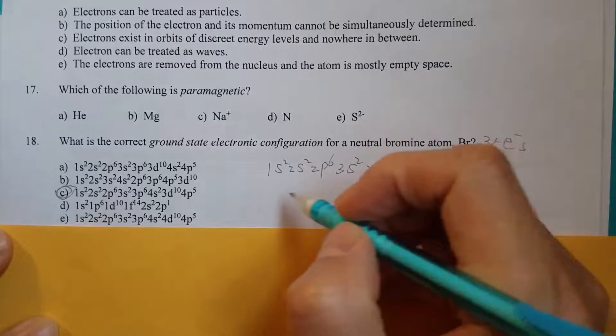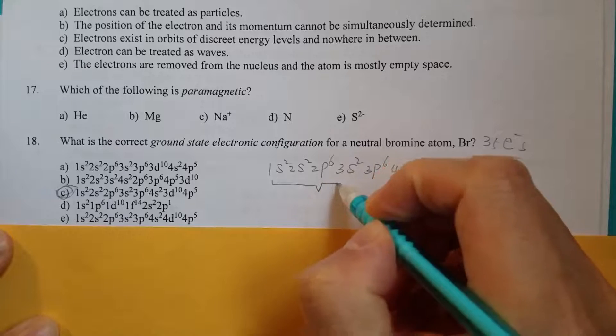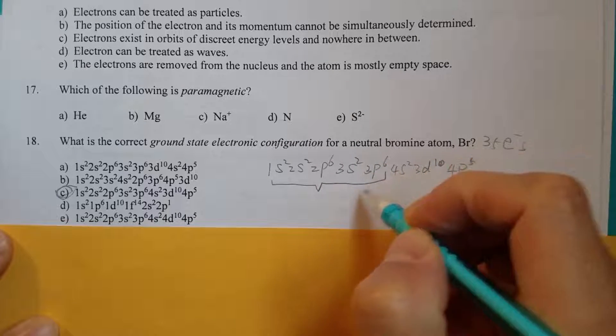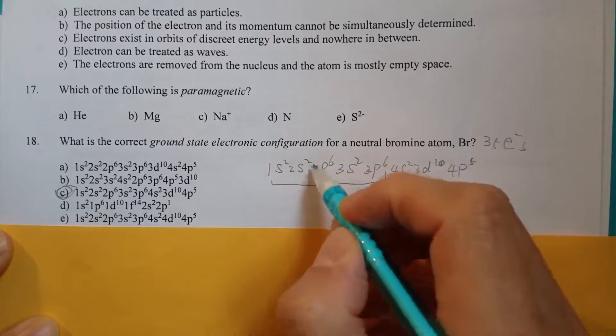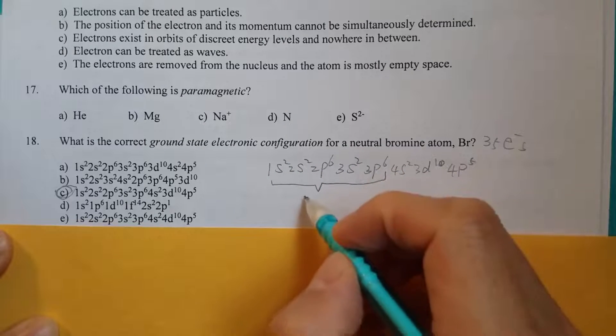You may recall, if we use the condensed electron configuration, this, that's total of 18—2, 4, 10, 12, 18, and 18—